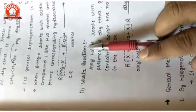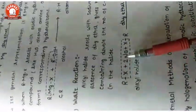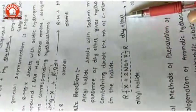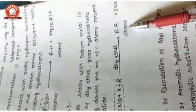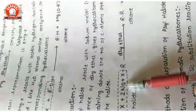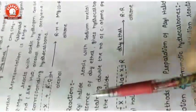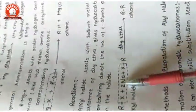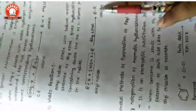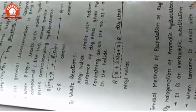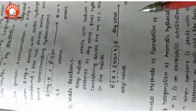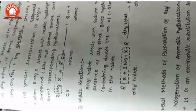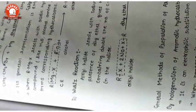Another important reaction is Wurtz reaction: when alkyl halide reacts with sodium metal in the presence of dry ether, it forms a symmetrical alkane. Always remember — in the presence of sodium metal, alkyl halides form symmetrical alkanes. This completes this part. Next we will discuss aryl halides — the aromatic part. Thank you.